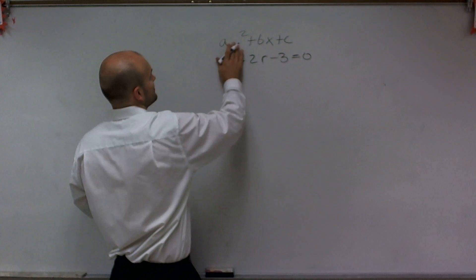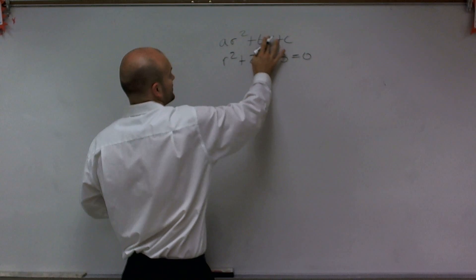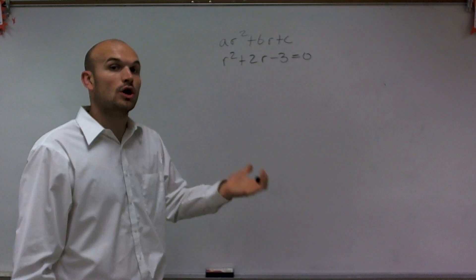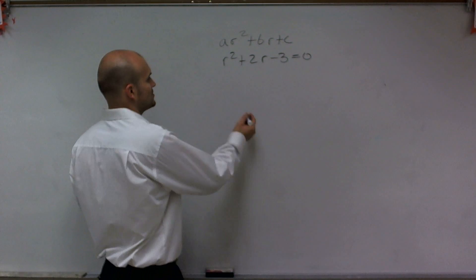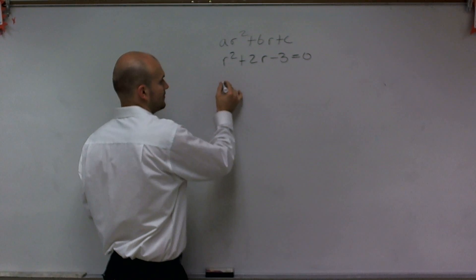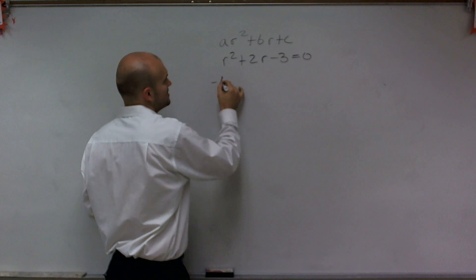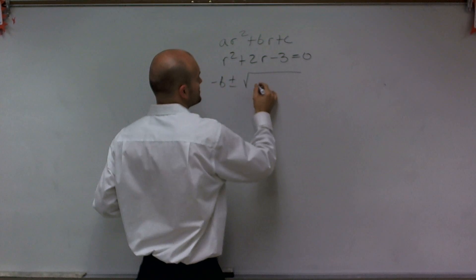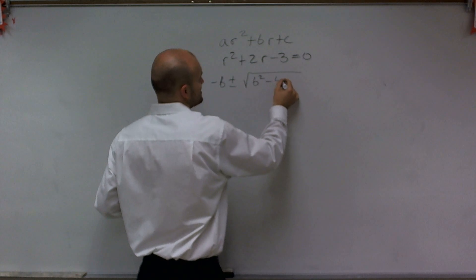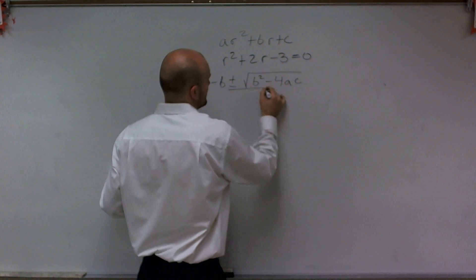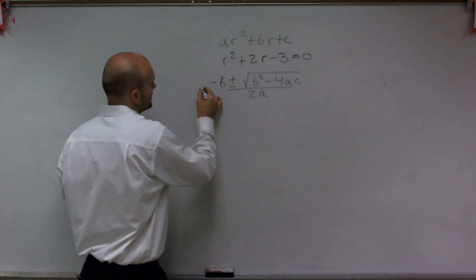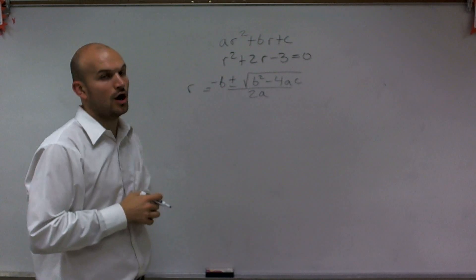I guess I could write it like this, right? Because my variable now is r using the coefficients of your r terms. So the quadratic formula states opposite of b plus or minus the square root of b squared minus 4 times a times c all over 2a is going to equal your value r.